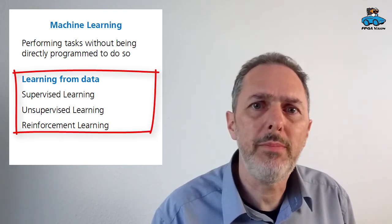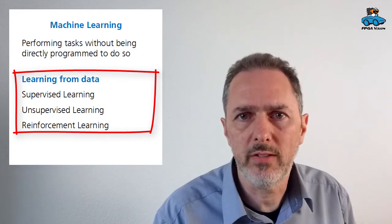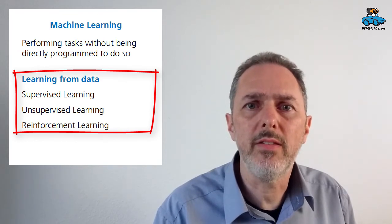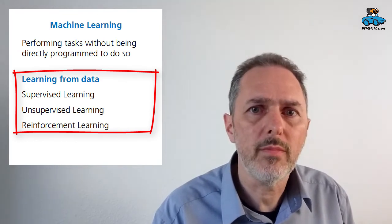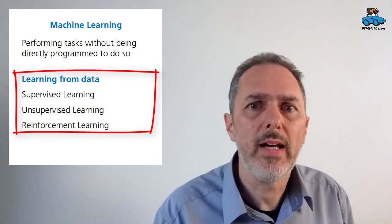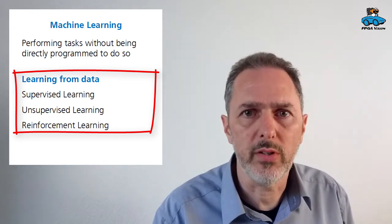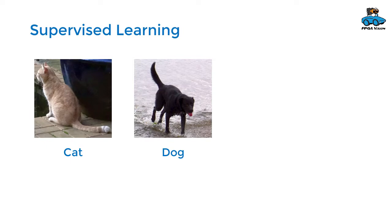There are three paradigms — three categories that can be distinguished: supervised learning, unsupervised learning, and reinforcement learning. Supervised learning means that you have data with labels. For example, you have an image of a cat and a label saying this is a cat, or an image of a dog with a label saying this is a dog. The machine learning system can learn from that.